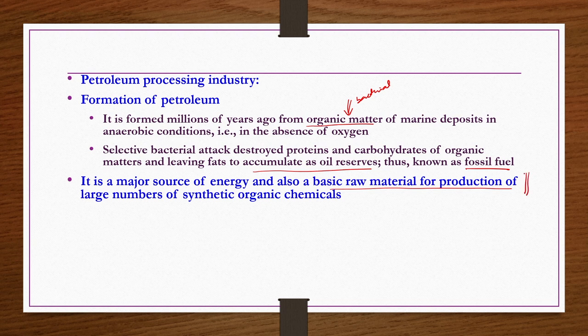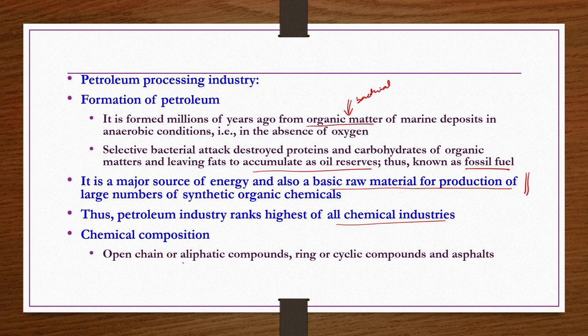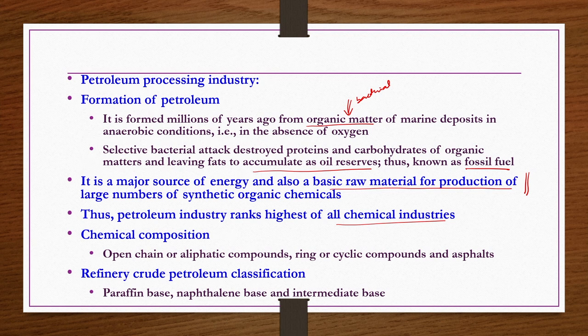Four weeks of the course are dedicated to petroleum-related subjects, because crude oil from petroleum refining is the source for hundreds of organic chemicals. Petroleum industry ranks highest of all chemical industries. The chemical composition of petroleum crude includes open-chain or aliphatic compounds, ring or cyclic compounds, and asphalt. Petroleum crude is classified into three categories: paraffin base, naphthalene base, and intermediate base.